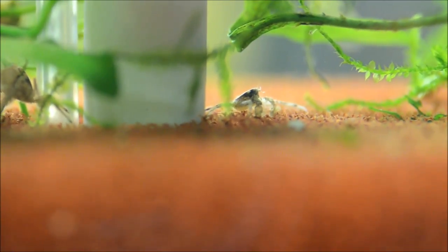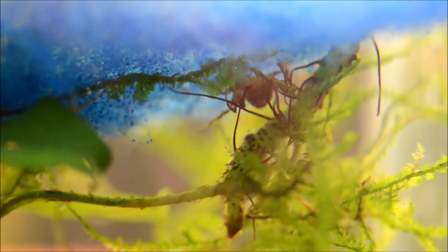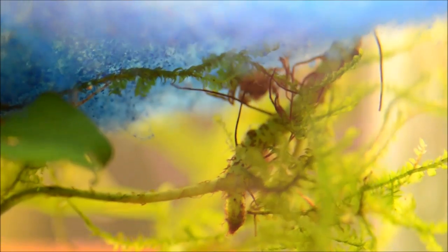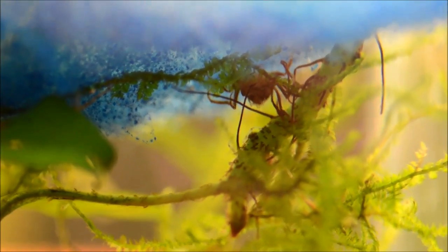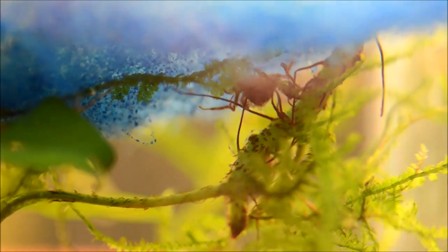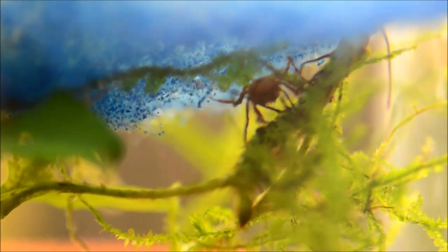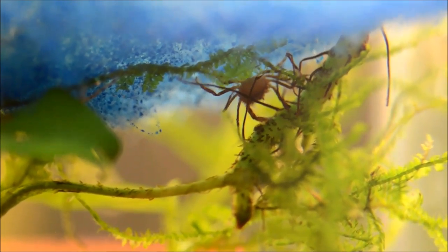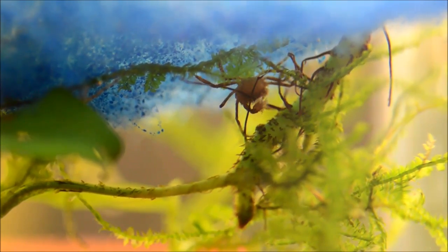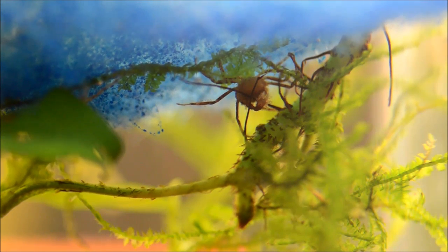For the most part, this is what they do. They just kind of sit around. See, there's one in the plant roots there. See the claws. They move very slowly and they're very easy to miss in a tank if you're not taking your time to look for them.